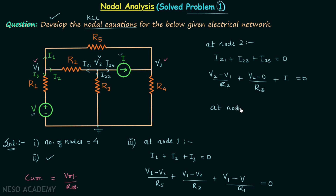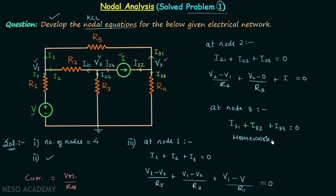Now we will write down the KCL equation at node 3. We again assume the currents: current in this branch is I31, current in this branch is I32, and current in this branch is I33. Following KCL at node 3: I31 + I32 + I33 = 0. It is homework for you to write down all three currents and obtain the final nodal equation at node 3. Try to obtain the equation and once you have your answer, post it in the comment section. That ends this lecture — see you in the next one.